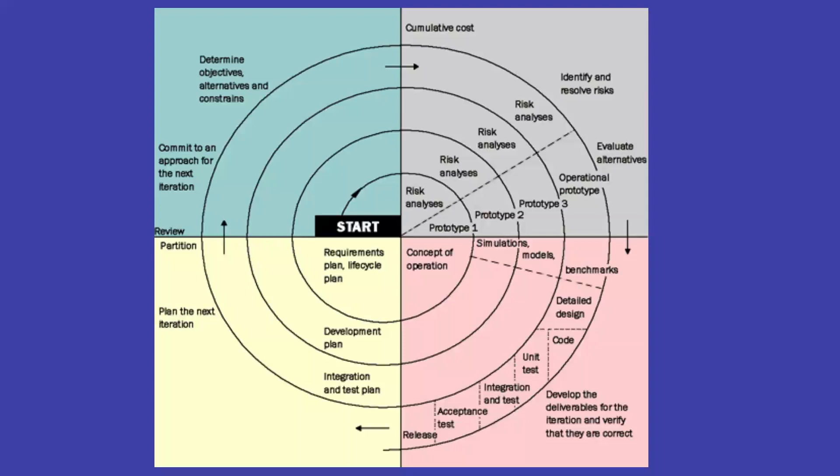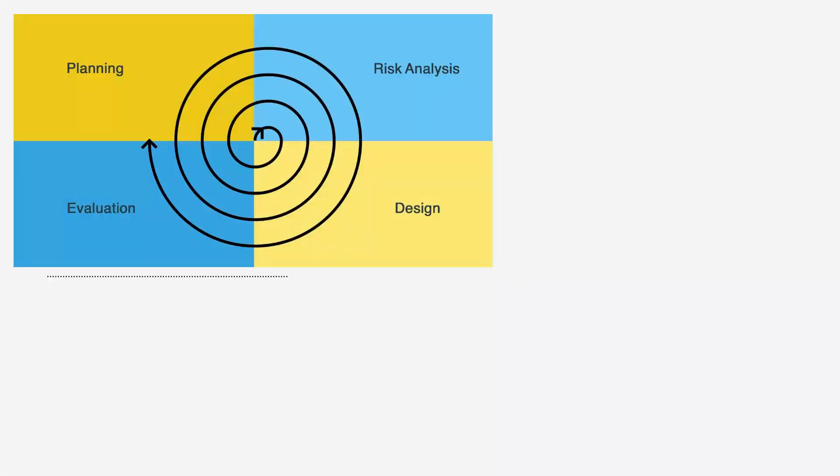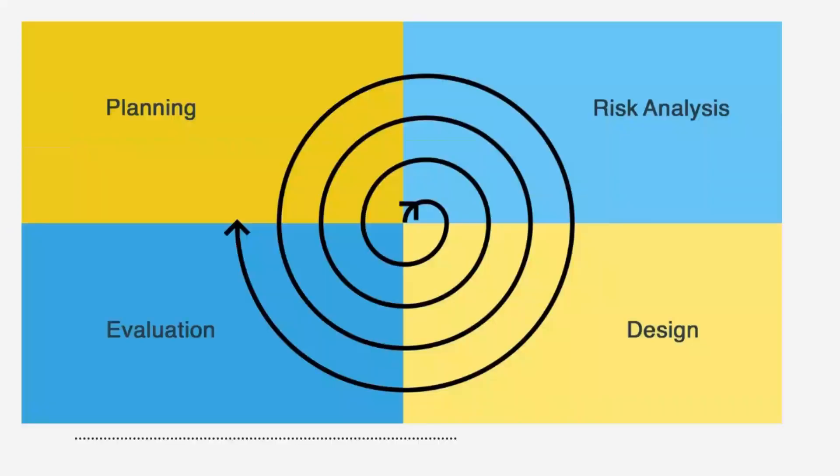The Spiral Model is an incremental risk-oriented lifecycle. The model has four main phases which are identified here: planning, risk analysis, design, and evaluation.